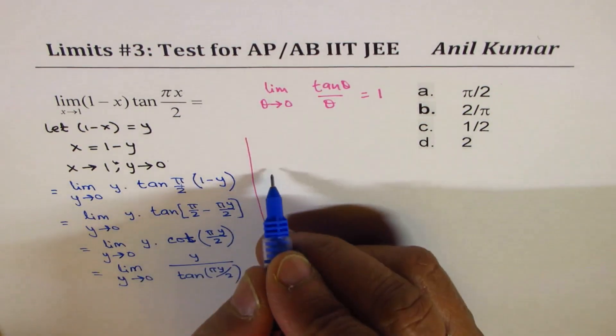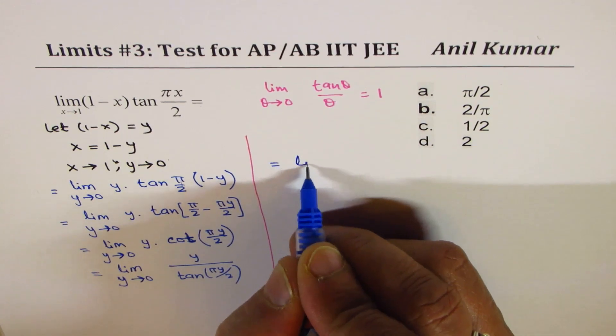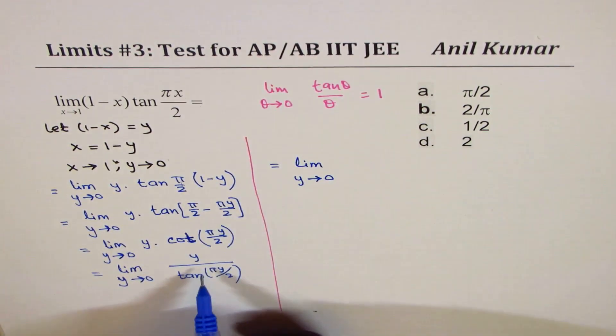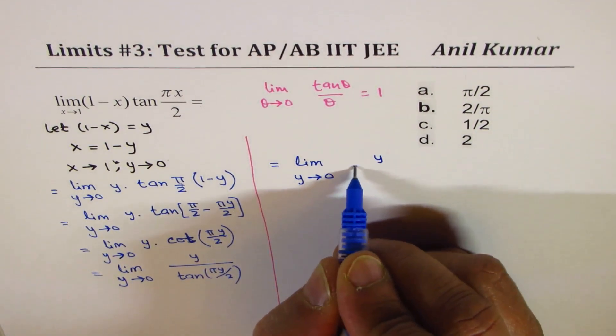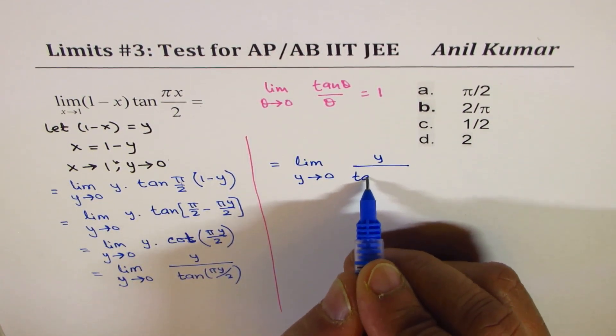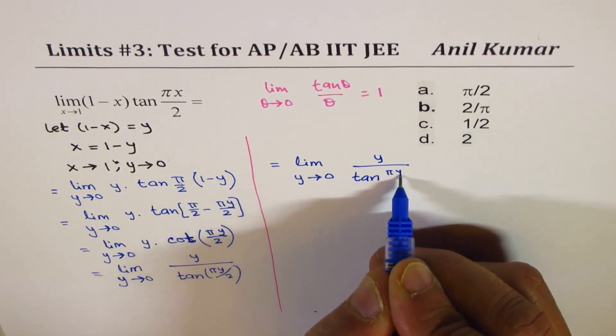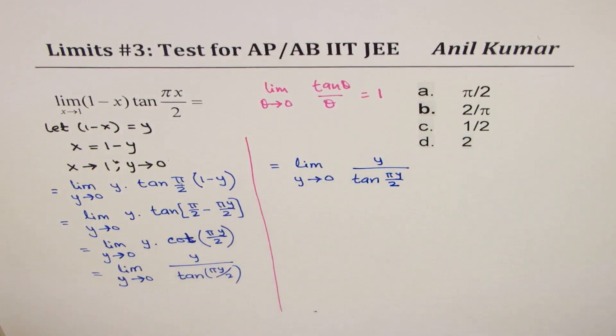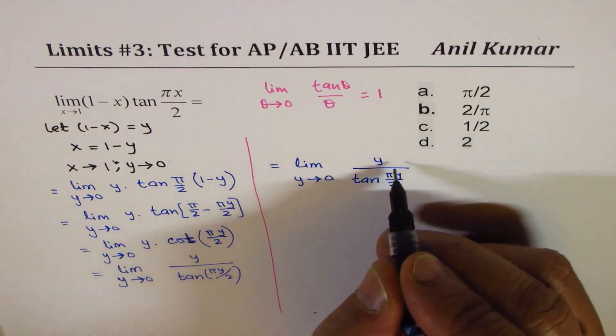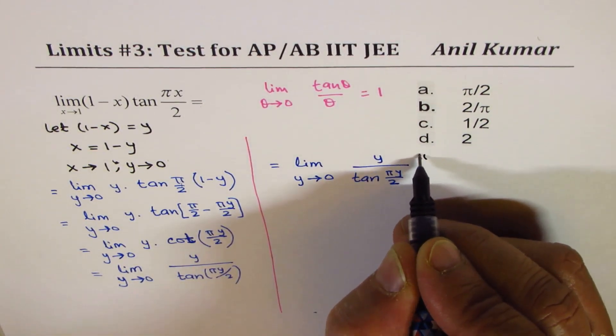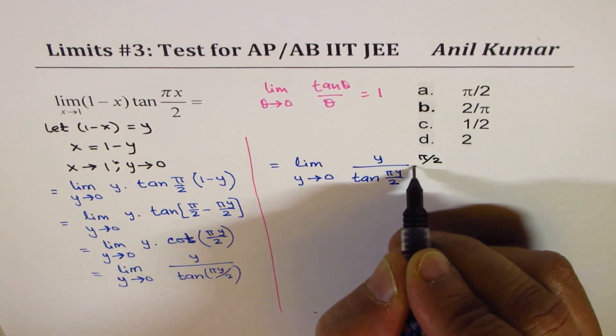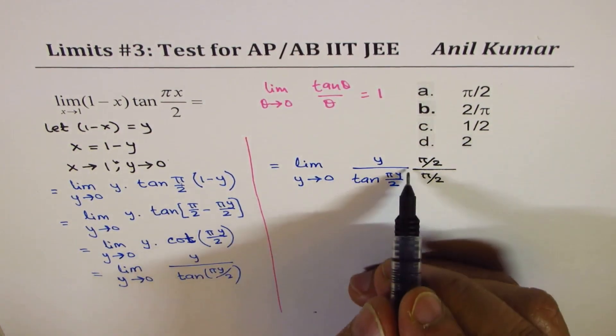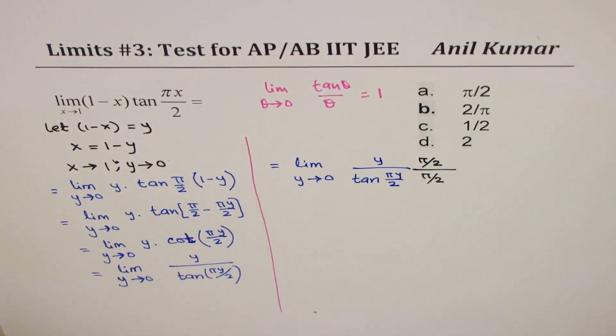So I could rewrite this as limit y approaches 0, y over tan pi y by 2. Now I want pi by 2 in the numerator, so I'll multiply the numerator by pi by 2 and also the denominator by pi by 2.